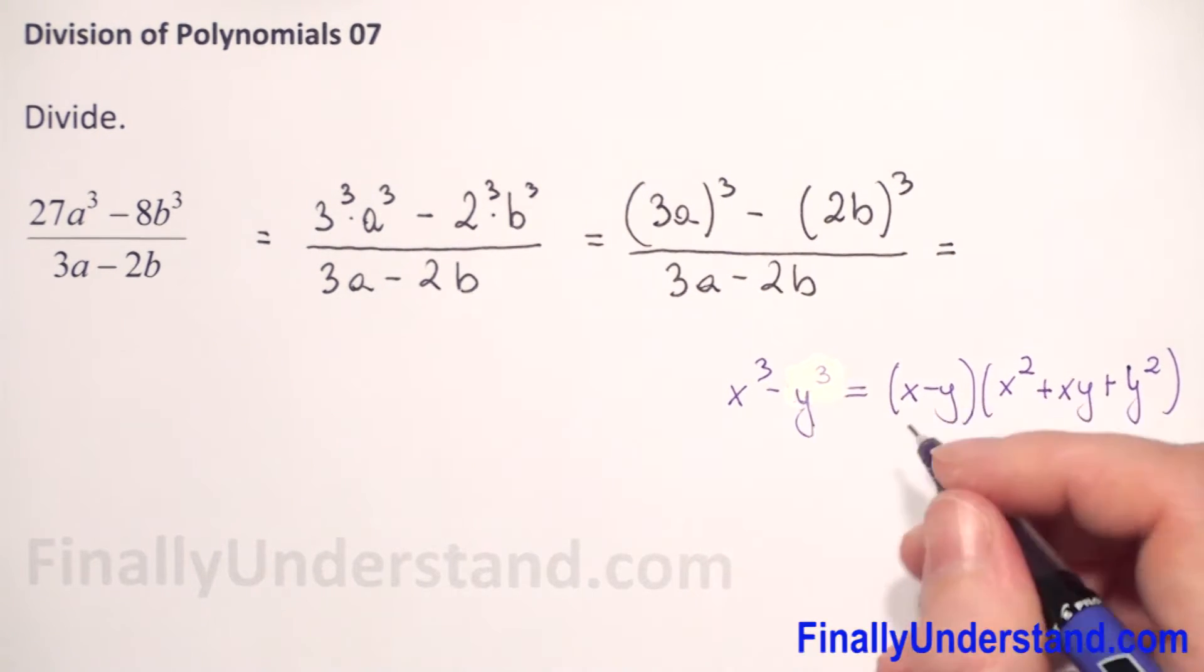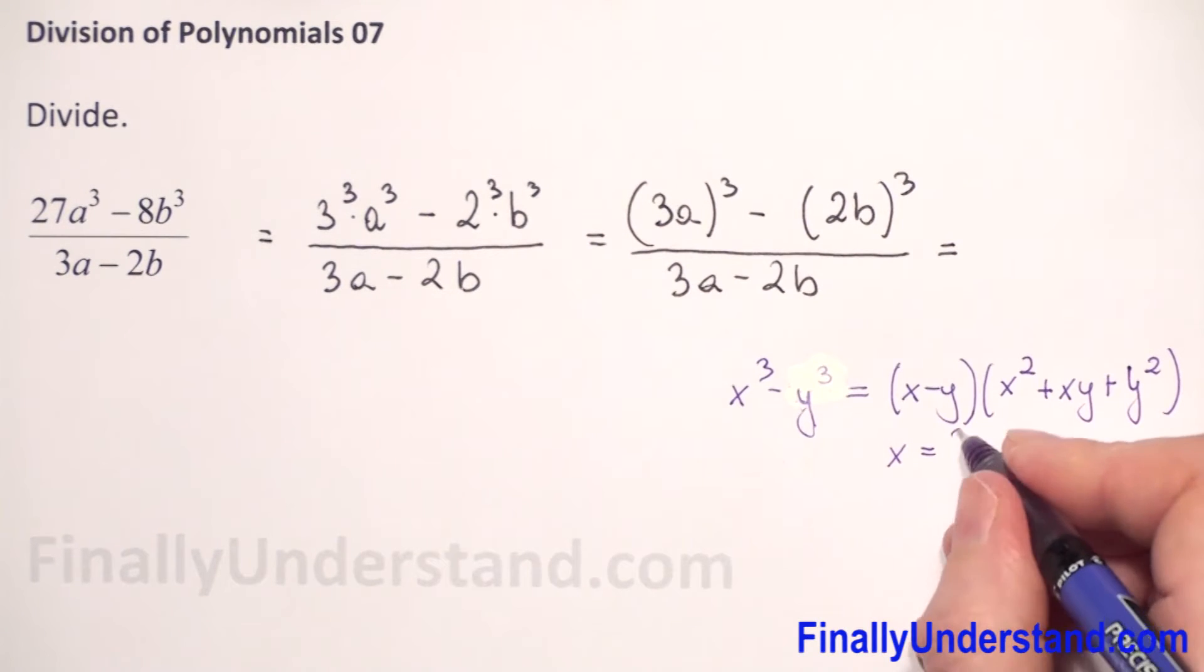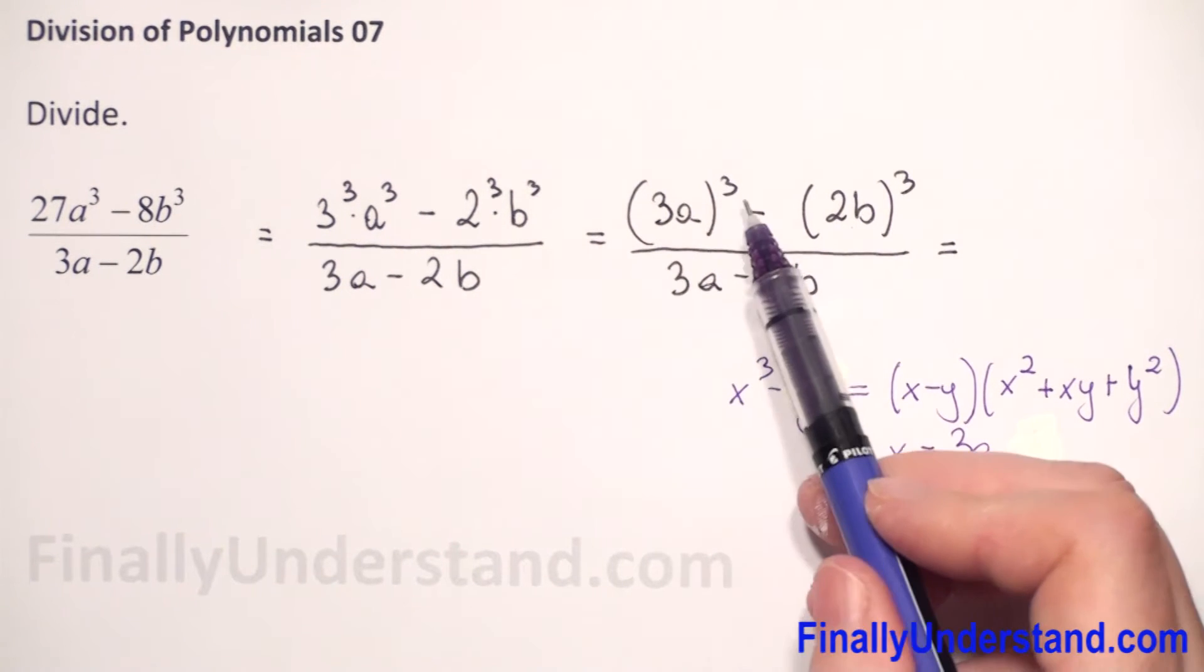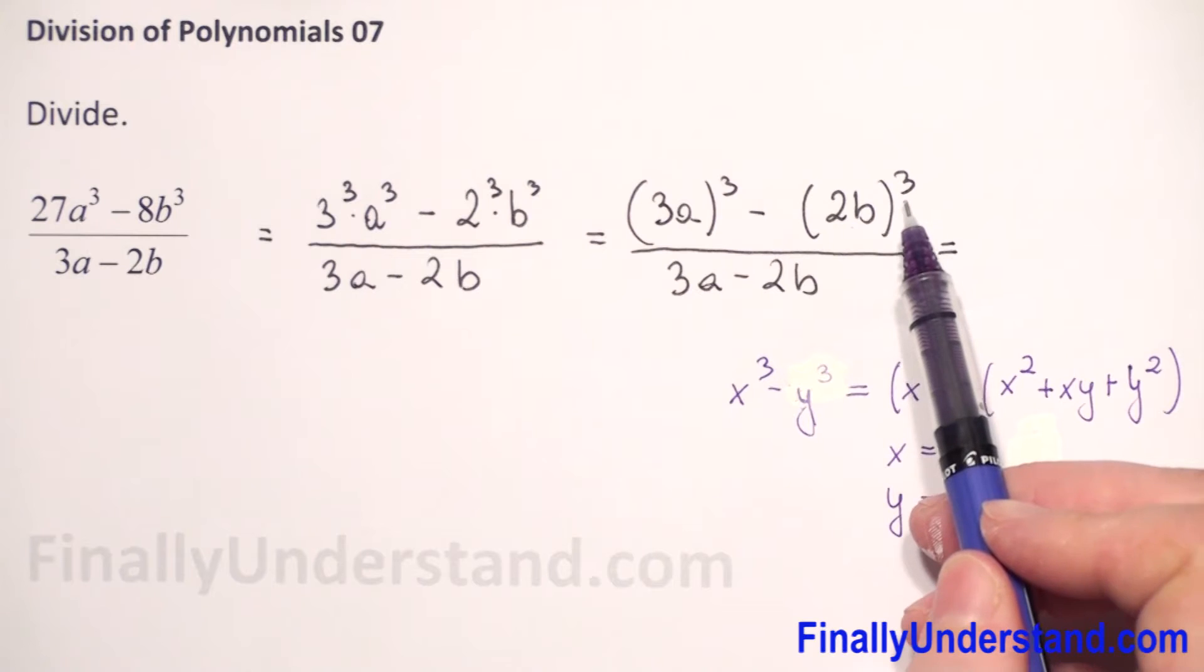In our example, x is equal 3a and y is equal 2b, we have 3a to 3rd power minus 2b to 3rd power.